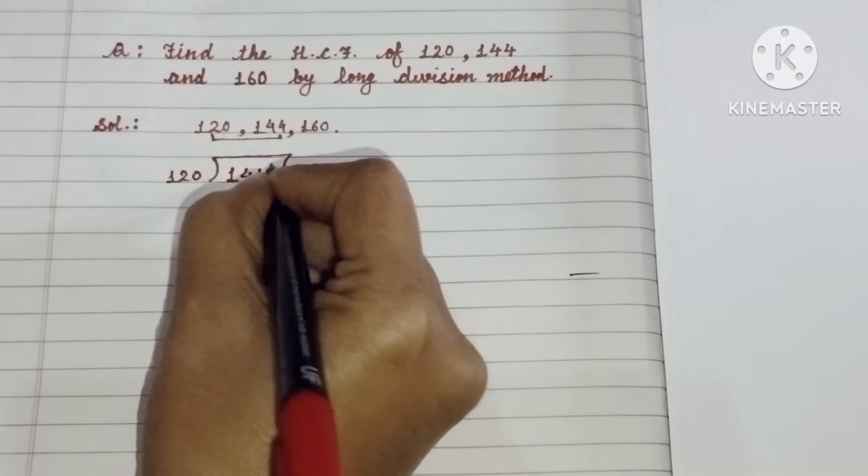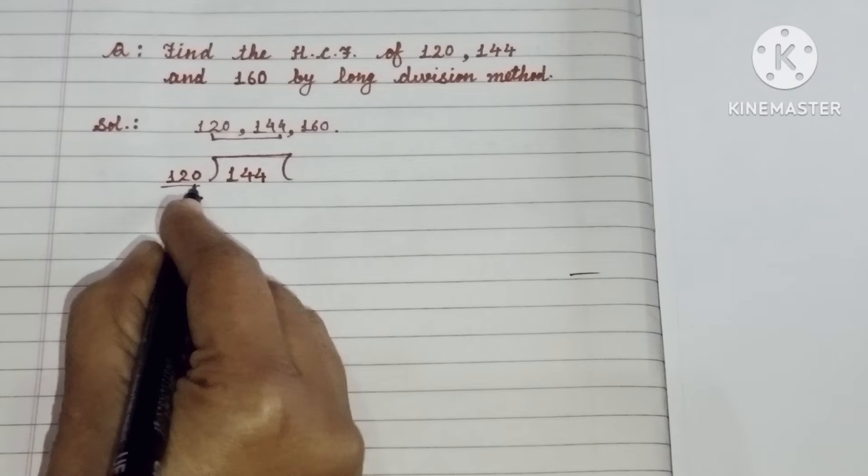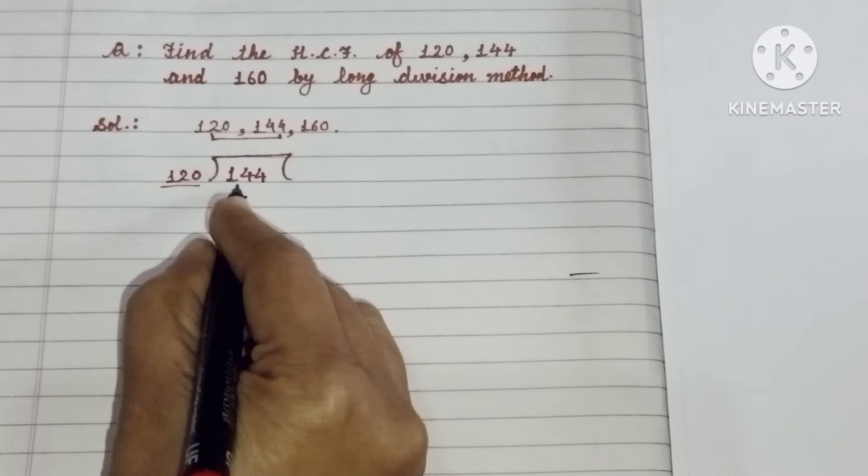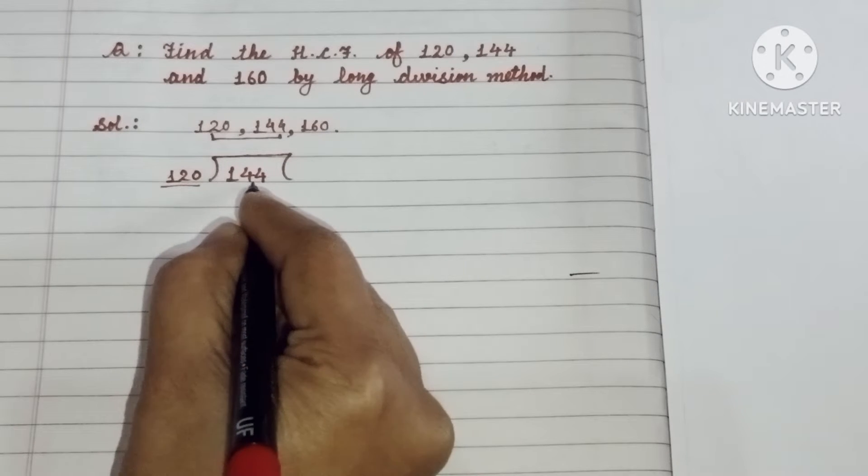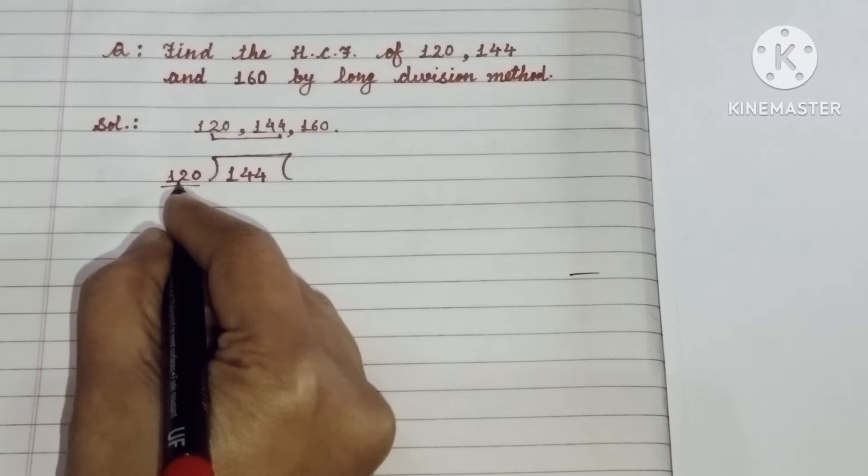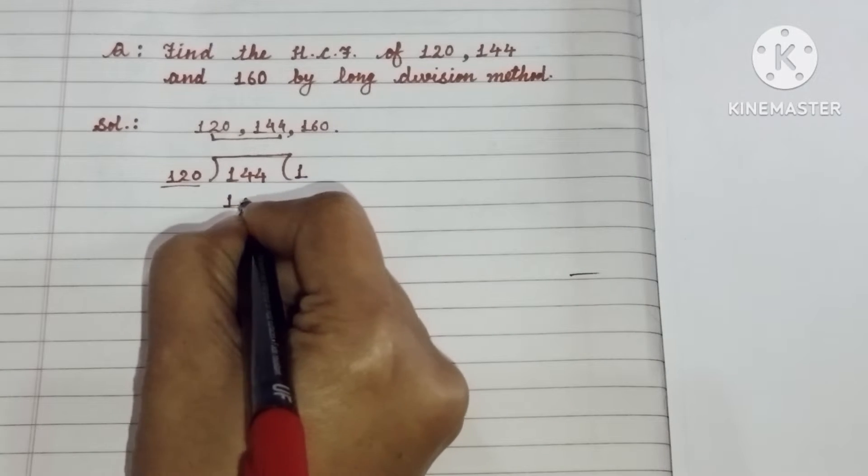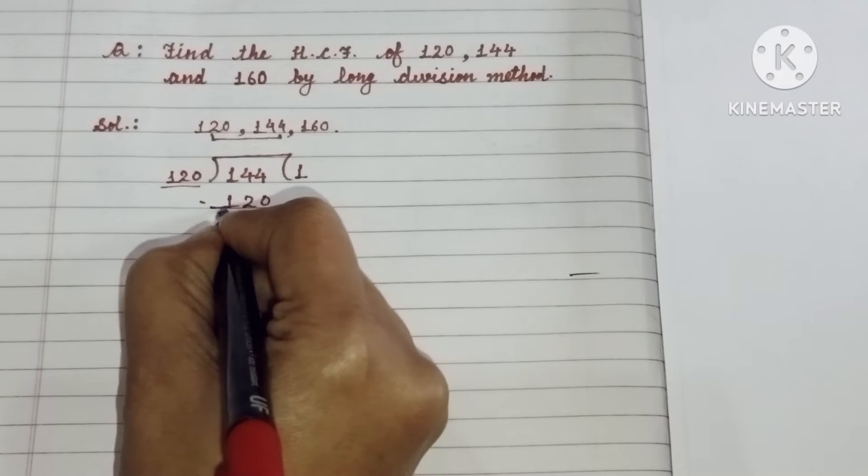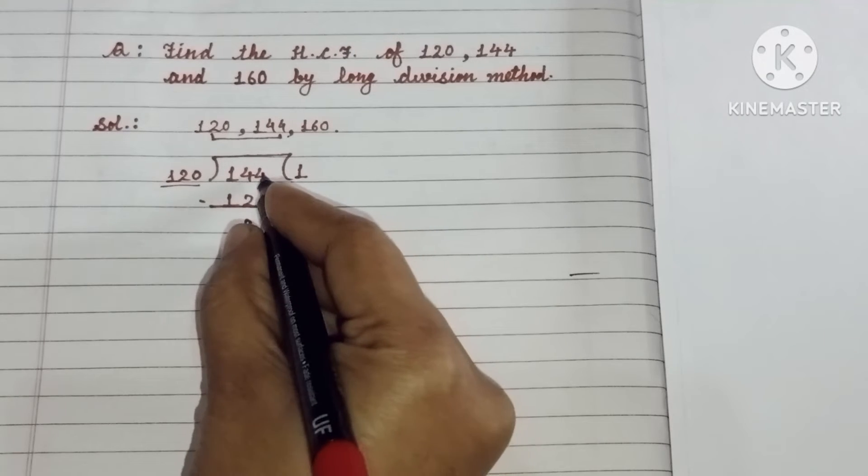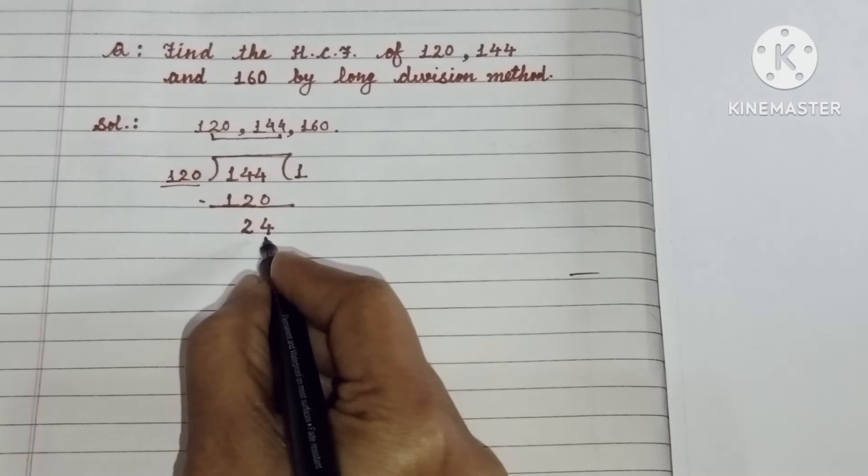Aap kya karenge bita? Smallest number ko divisor ki place pe lenge. Or greatest number ko dividend ki place pe. Now divide 144 by 120. So 120 once a 120, so 120, subtract 120 from the number 144. 144 minus 120 is 24. 24 is the remainder.